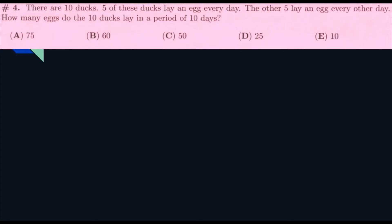Okay, so the next question. There are ten ducks. Five of these ducks lay an egg every day. The other five lay an egg every other day. How many eggs do the ten ducks lay in the period of ten days? So, if we're looking at the first five that lay an egg every day, one of the five ducks can lay ten eggs in the period of ten days. So, we multiply that by five, and we'll get 50 for the first five. And then, the other five is every other day. So, we would just divide the 50 that we had before by two, and we will get the amount that the other five get, which is 25. And then, we add 50 and 25, and we get 75, which is A. So, our answer is A.